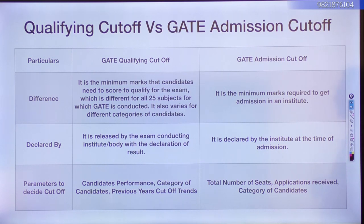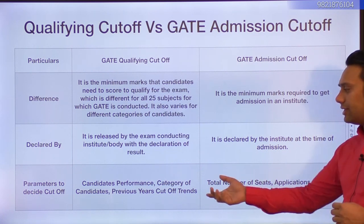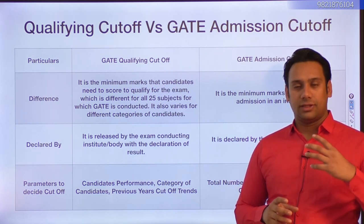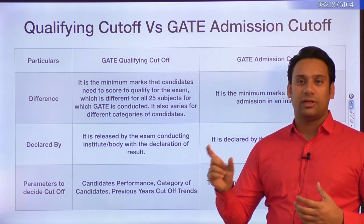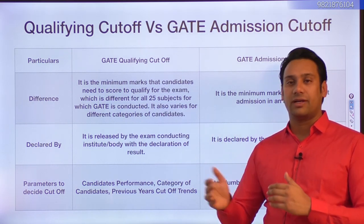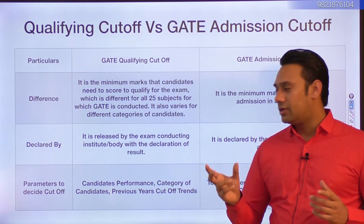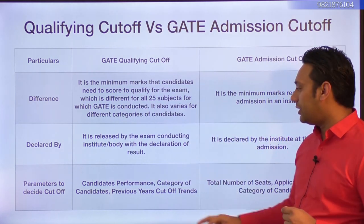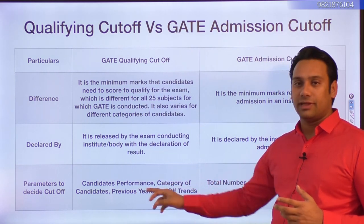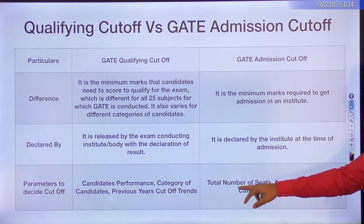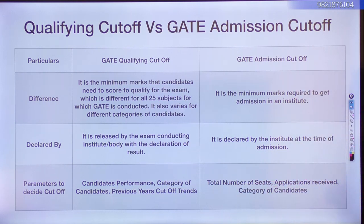The GATE qualifying cutoff is decided based on: the number of candidates applying, the number who cleared the cutoff marks, and the difficulty level of the question paper. The qualifying cutoff depends on candidate performance, category, and previous year cutoff trends. The admission cutoff depends on the number of seats available in the institution and the number of applications received.